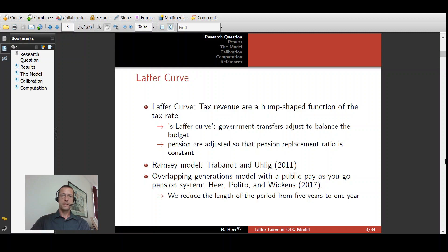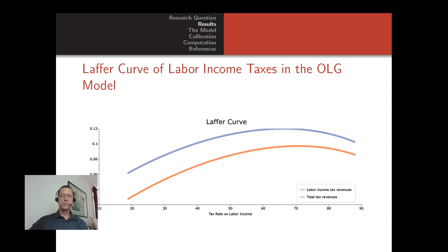The basic idea of the Laffer Curve is that with increasing taxes, tax revenue will also increase. But once you hit high income taxes — for example, approximately 70% — taxes start to decline again because the disincentive effects to work increase so much that the tax base declines faster than the tax rate rises. At a tax rate of 100%, nobody has an incentive to work and revenues drop to zero.